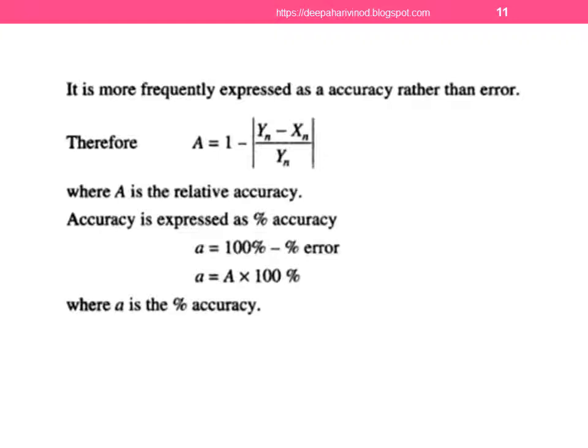It is more frequently expressed as accuracy rather than error. Therefore, A is the relative accuracy, given by A equals 1 minus the magnitude of Yn minus Xn divided by Yn. Where A is the relative accuracy. Accuracy is expressed as percentage accuracy: a equals 100% minus percentage error, or a equals A times 100%, where a is the percentage accuracy.